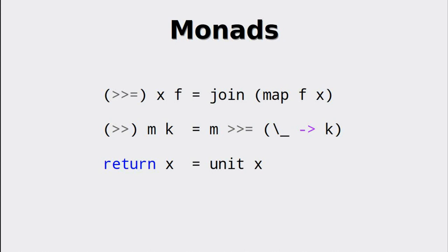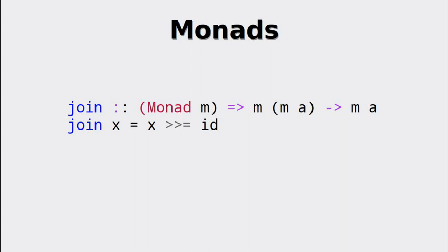Normally you would not define join but define the bind operator first, so is it possible to recover join from the bind operator? Indeed, it is possible by using the identity function, returning the internal monad of the outer context.